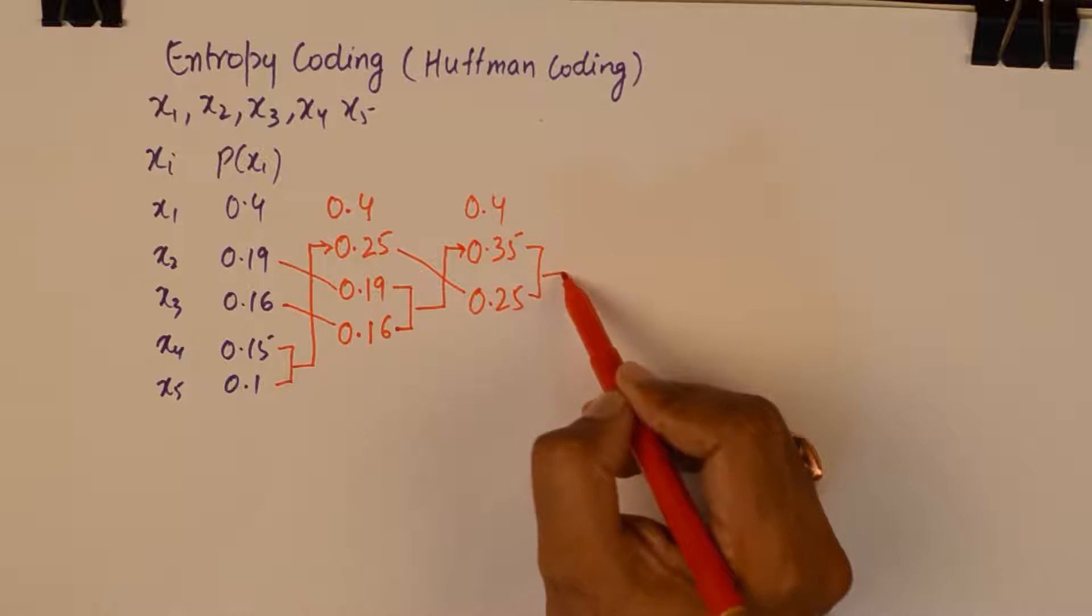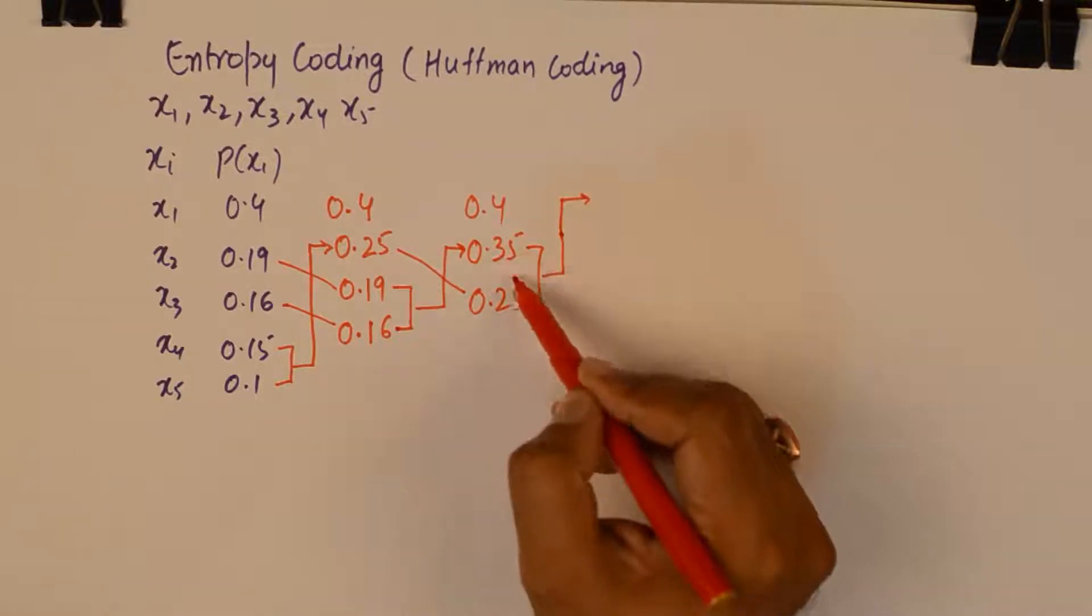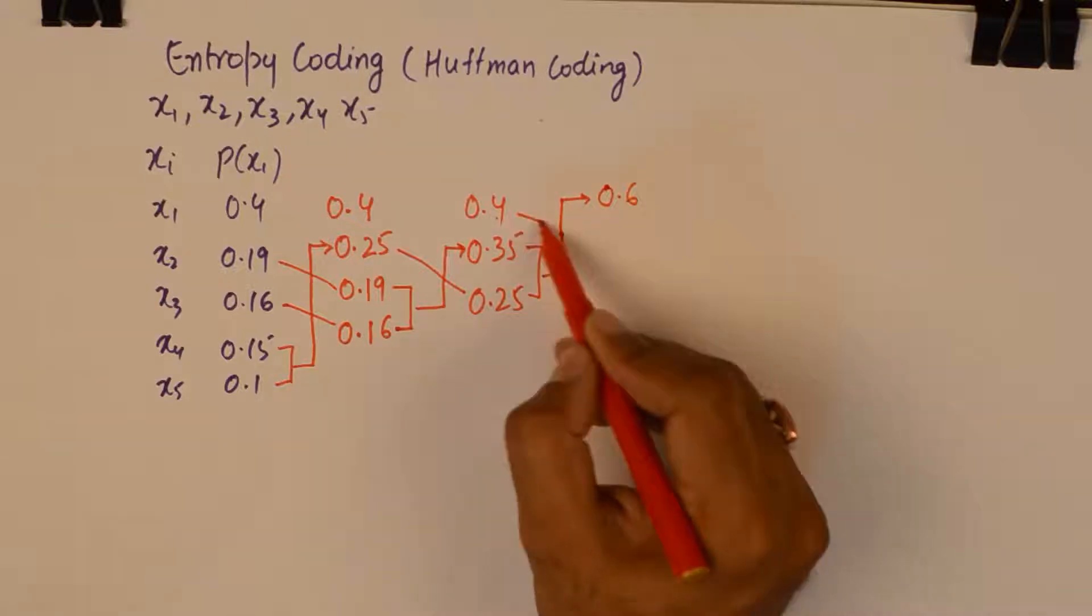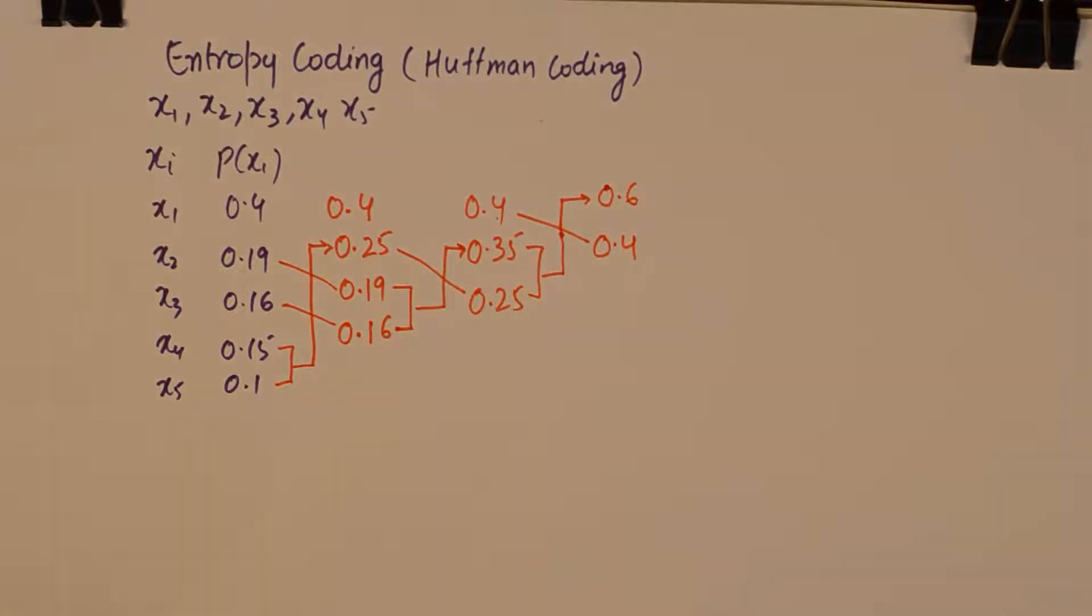We need to keep doing this until the sum of these two probabilities is greater than 0.4. So I will move it to the top and 0.4 goes here underneath it. So we need to keep doing this until we are left with only two probabilities. In other words we need to divide the entire system into two parts. They might not come out to be equal but that is how we need to do it.